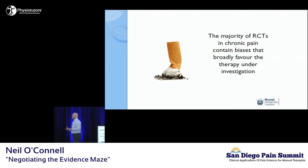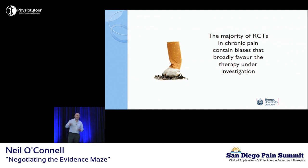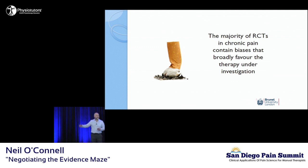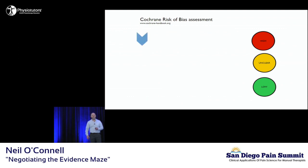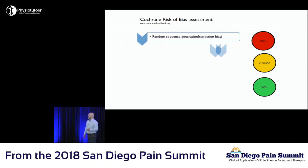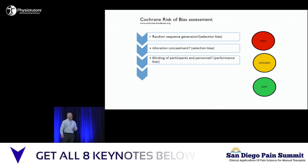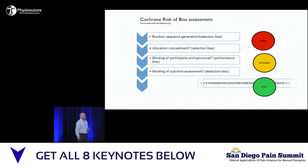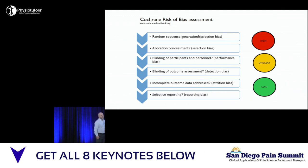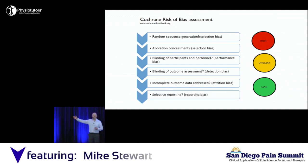Another uncomfortable truth we don't hear much of is that the majority of RCTs of interventions in rehab contain biases that broadly favor the therapy under investigation, as we saw in one of my first slides. This is the Cochrane Risk of Bias tool — and it's really just for the nerds, but I think you're probably all nerds. Each of these things represents a characteristic of a clinical trial — basically a list of ways you can design a trial to get the wrong answer.